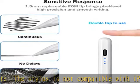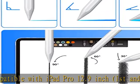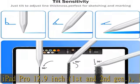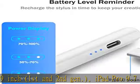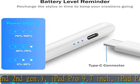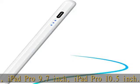Tilt sensor and perfect precision: just tilt the stylus at different angles to draw the desired thickness. Precisely controlled writing with no lag. It has higher sensitivity and a more comfortable feeling.